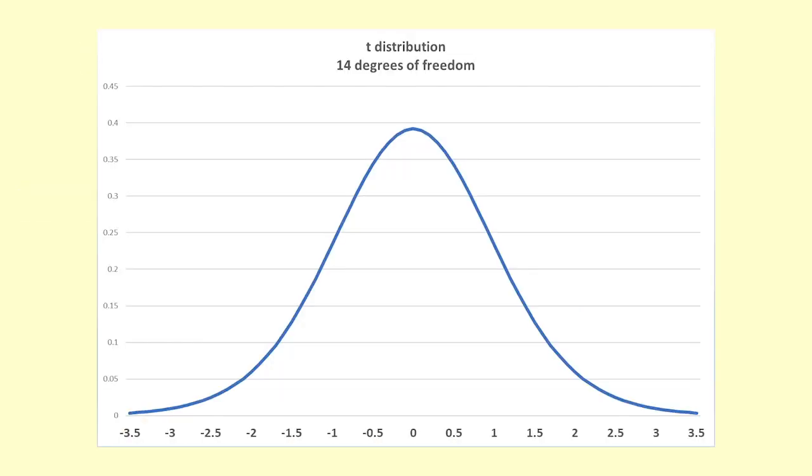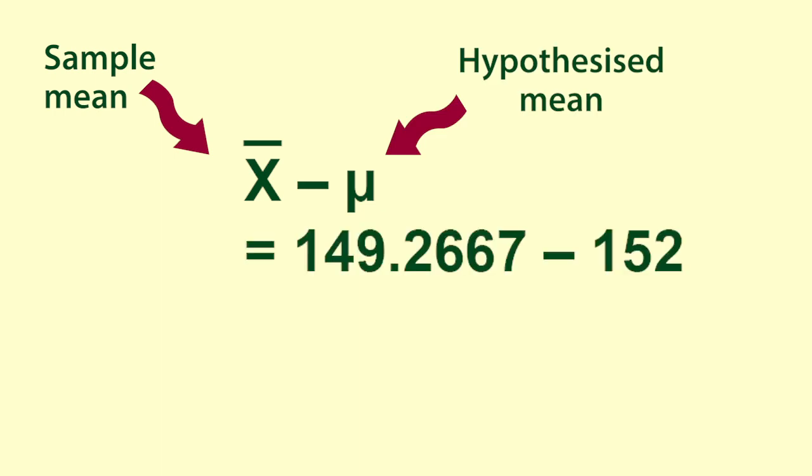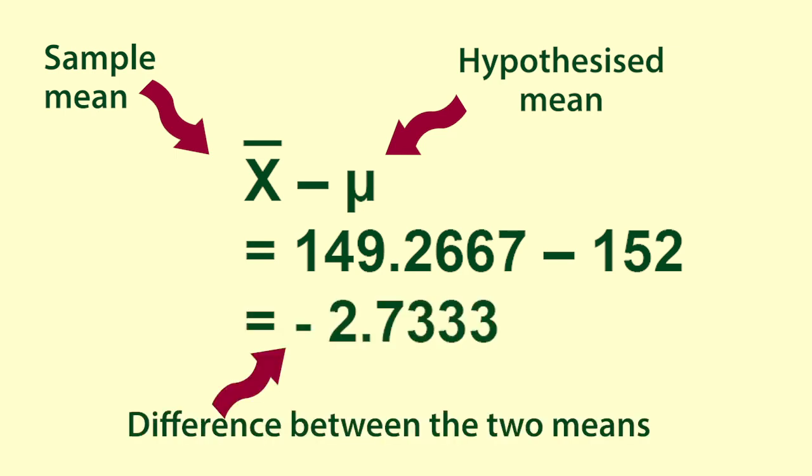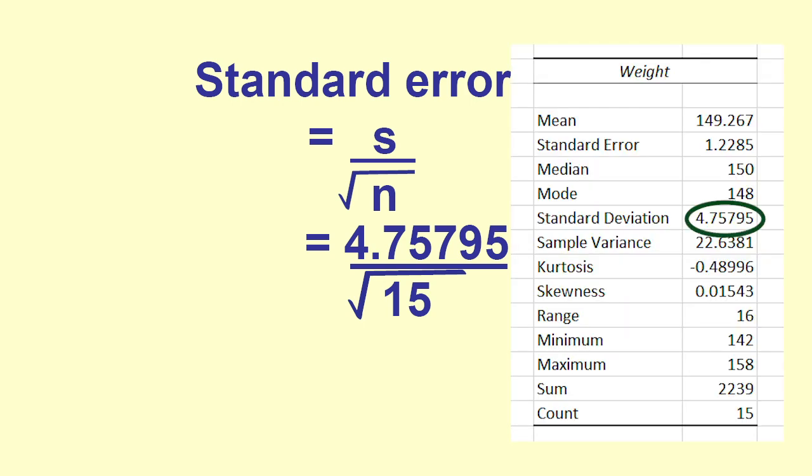The t distribution is like a standard normal distribution. It has a mean of 0 and a standard deviation of 1. To use the t distribution we need to find out how many standard errors the sample mean is from the hypothesized population mean. We calculate the sample mean minus the hypothesized mean, and we find that it is 149.2667 minus 152 which is negative 2.7333. The standard error is 4.75795, the sample standard deviation, divided by the square root of 15 which gives 1.228497. This is a measure of the spread of sample means.